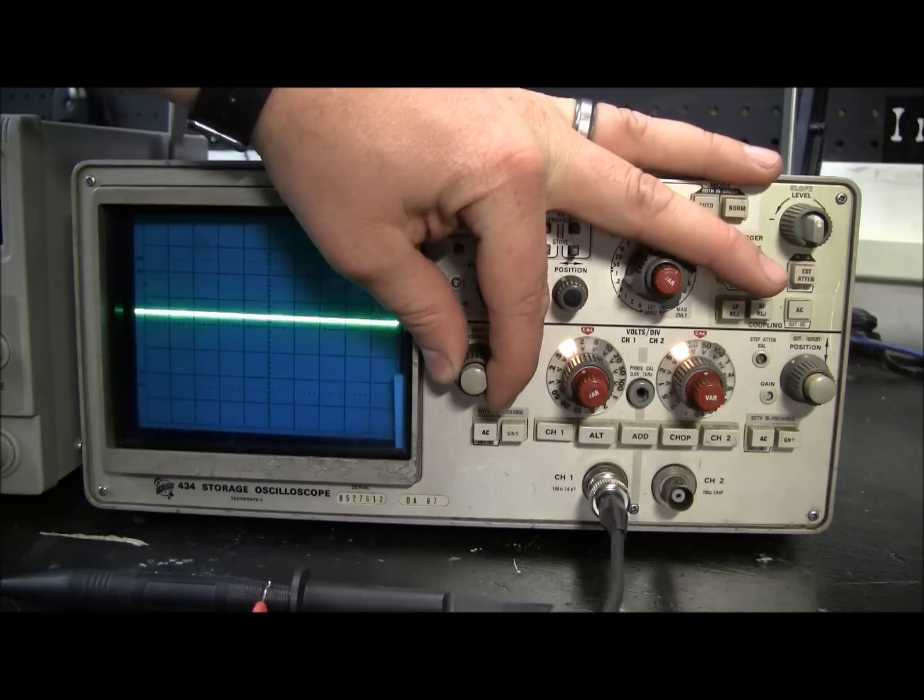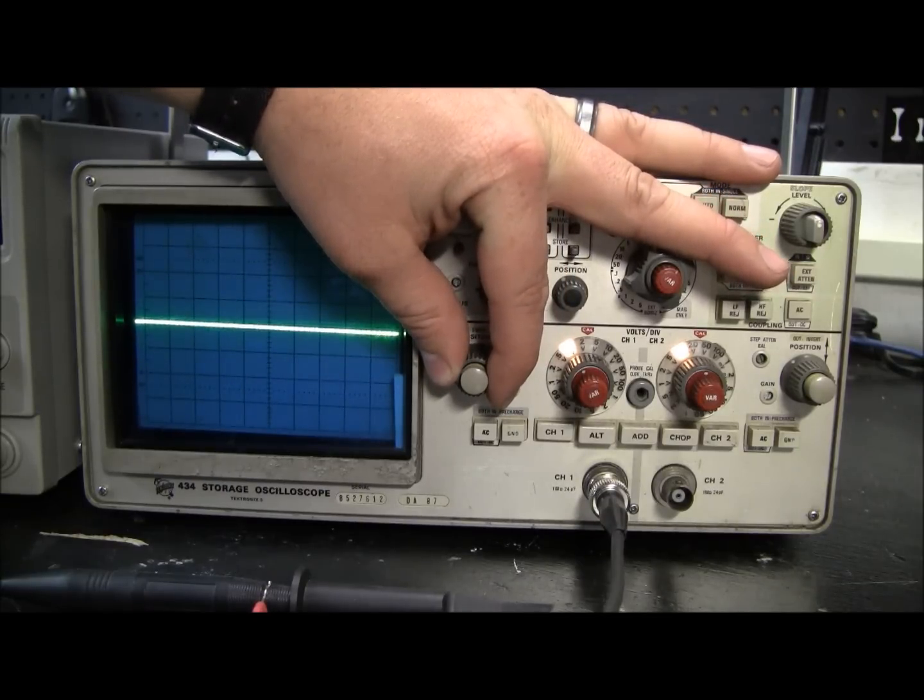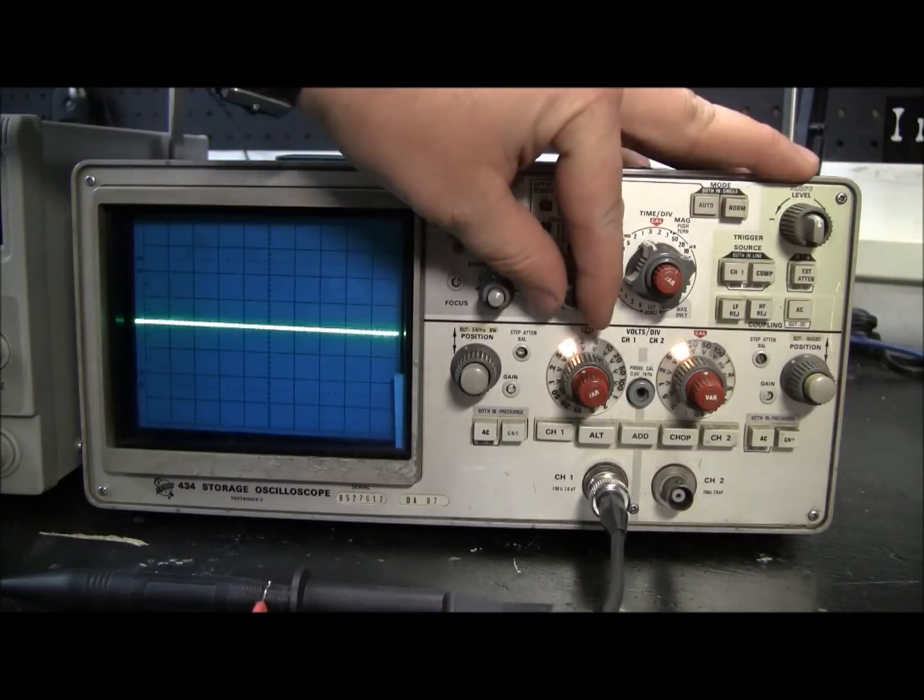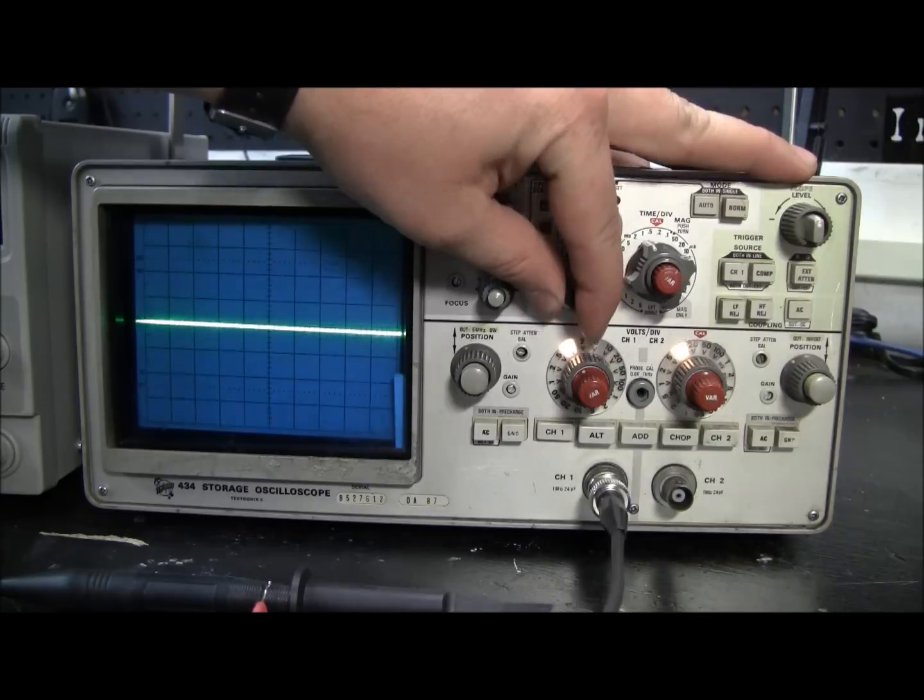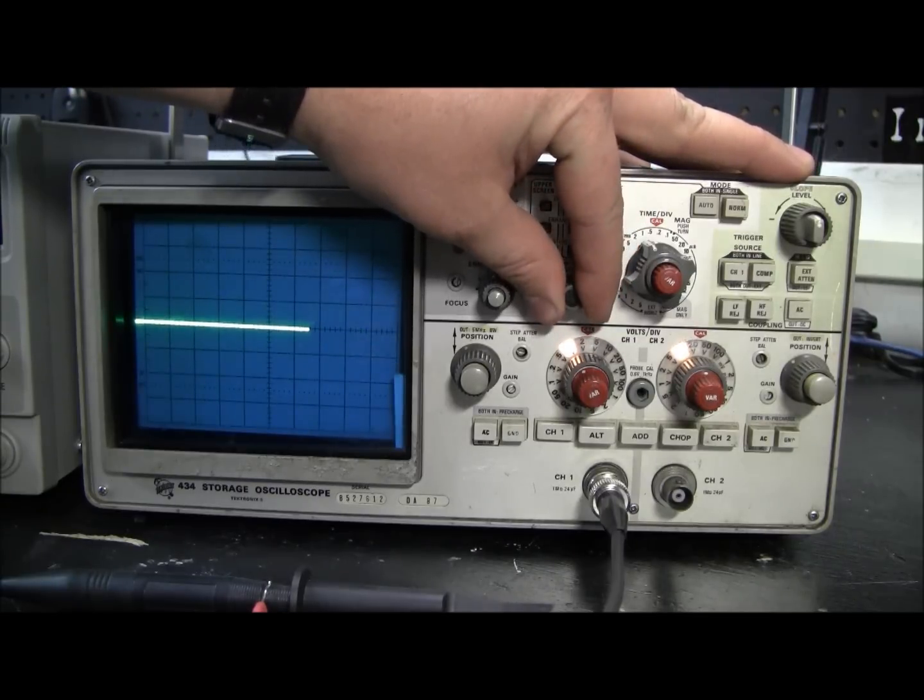Here's my vertical position, so I want to zero it right on that center line. Then a horizontal position here. Just try to get it about in the middle. And then call that good.